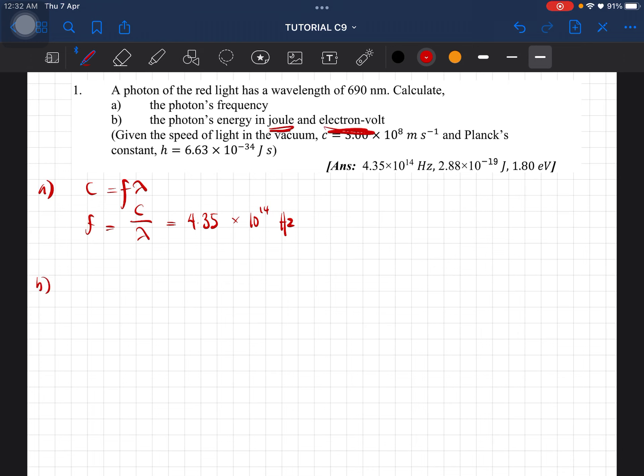And for question B, the photon's energy in joules and electron volts. Firstly, the equation is E equals hf. This gives us 2.88 times 10 to the power of negative 19 joules.